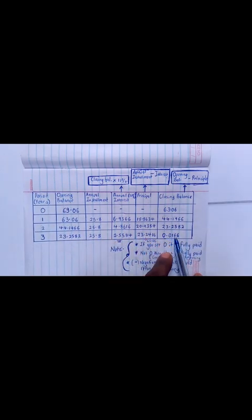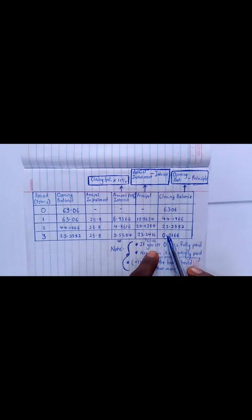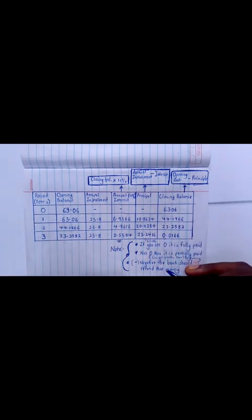Since you're seeing a zero, it means you've fully paid up this loan. Whenever you see a zero, it means you are fully paid up. Whenever you see a number which is maybe one, two, or something, it means you have not yet fully paid the loan. That means you must go for refinancing or get another loan to be able to pay up this loan.